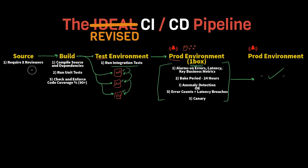So this is the previous version of the pipeline from our previous video. As a quick recap, we had a source step where we required a certain number of reviewers. We had a build step which included compilation, unit tests, and code coverage checks. We had a test environment that ran our integration tests. Then we had a production one-box environment — or 'canary release' as some folks correctly pointed out — which is a progressive deployment step where we only deploy to one host in production. This included checks in terms of alarms, bake period, and anomaly detection on error counts and latencies. We also had a canary step which is a periodic health check on the state of the system. Once it's ready, it goes to the production step.